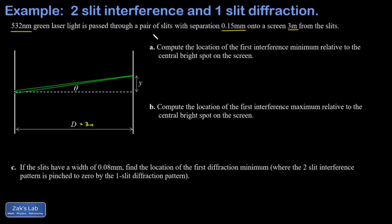In part a, we're asked for the location of the first interference minimum relative to the central bright spot on the screen. So the way this formula turned out is d sin θ equals (n + 1/2) times the wavelength λ, where n is 0, 1, 2, and so on. That little d is the slit separation, so that's 0.15 millimeters for us.